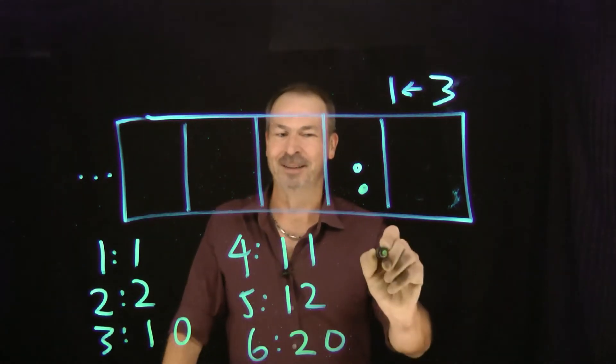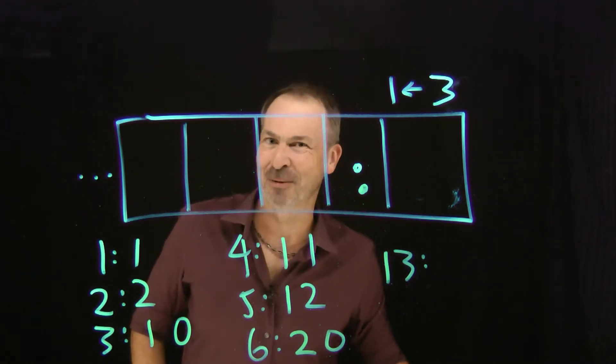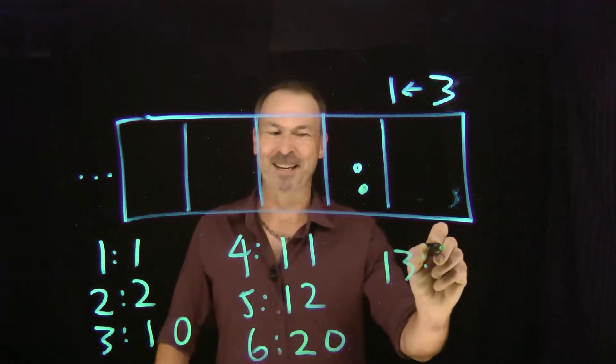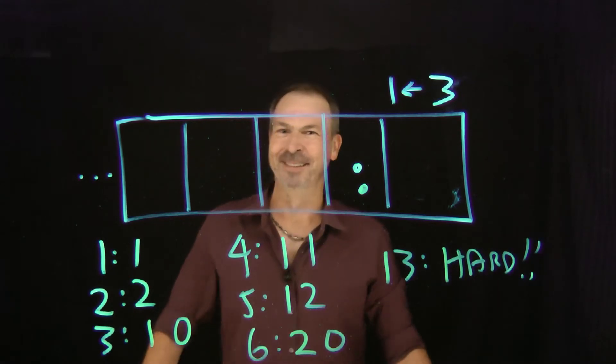Of course, now I'm wondering about the number 13. What's the code for 13 on a 3-1 machine? Hmm, is it hard? Or is it now doable? I wonder.